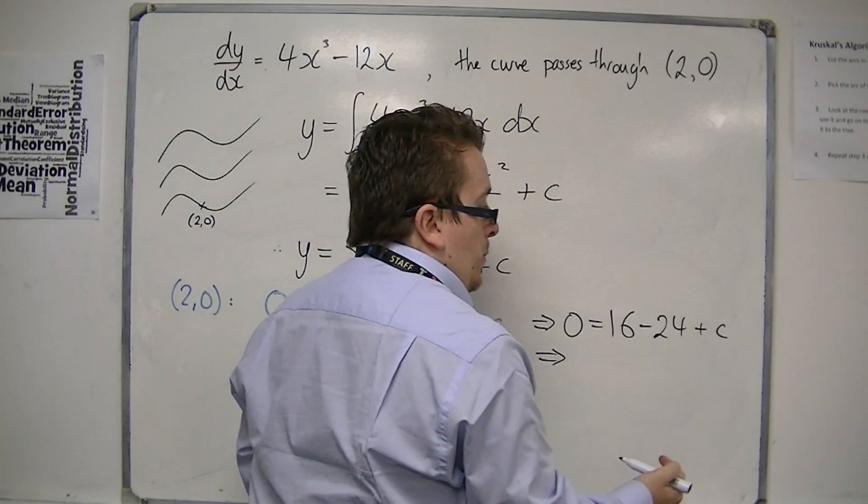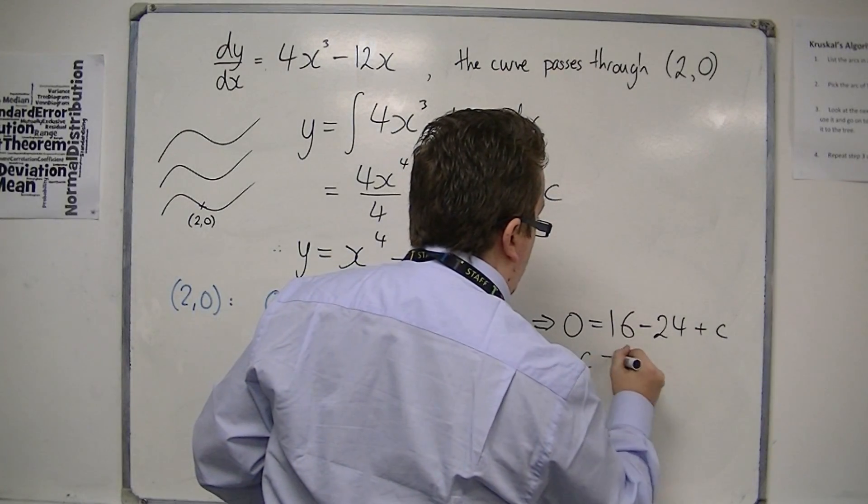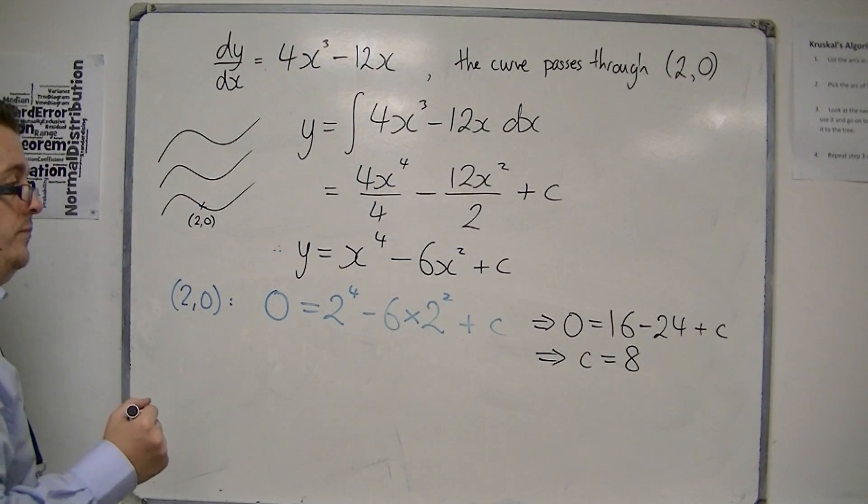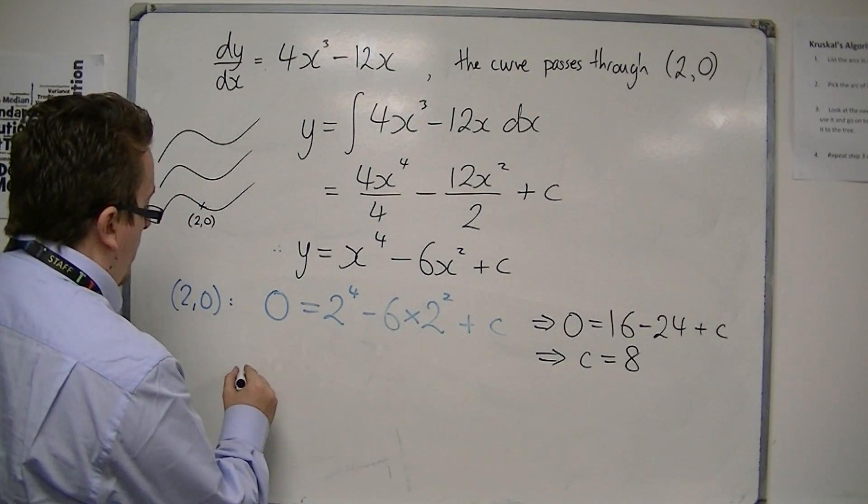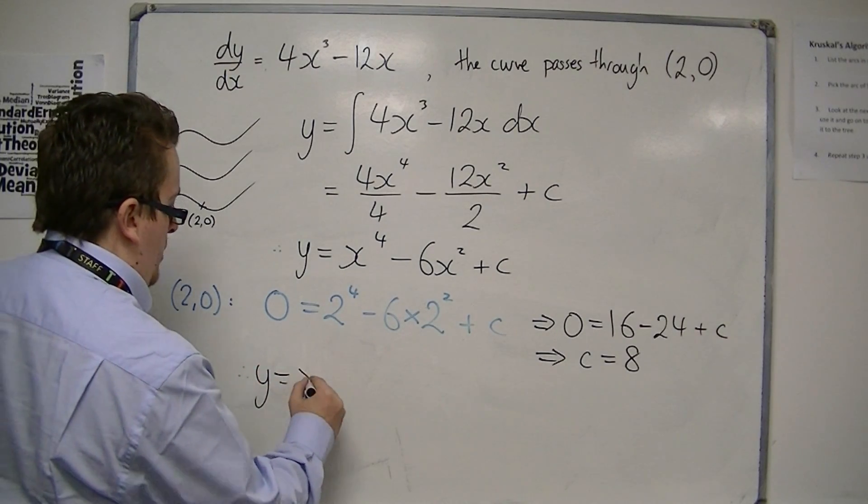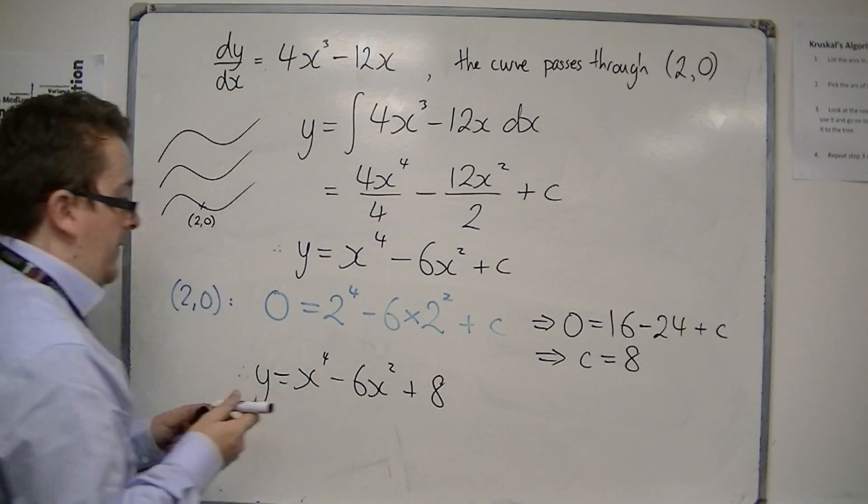16 take away 24 is minus 8. So c must be 8, in order for it all to be 0. So the particular solution that we're looking for is this, where c is 8.